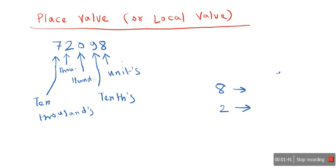Now let's see what will be the place value of 8. The place value of 8 will be 8 multiplied by 1, equals 8, as it is located in the unit's place.